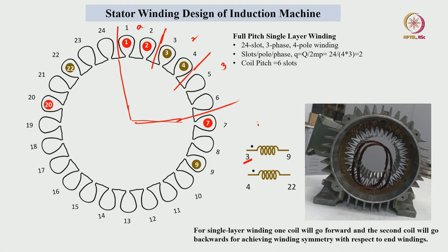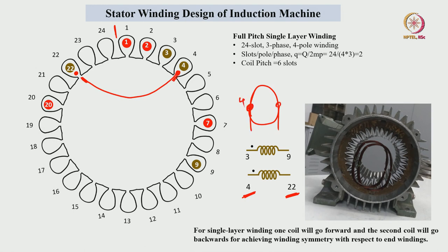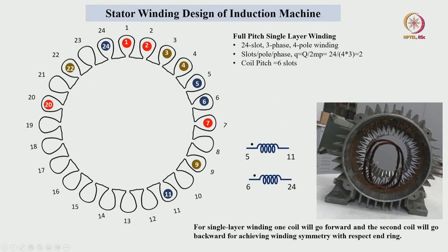The second phase coil is placed in slot number 3 and slot number 9. Next, a coil is inserted in slot number 4 and slot number 22. The 4th slot and 22nd slot are connected by this coil. One coil side sits in the 4th slot and the other in the 22nd slot. In the same fashion, we place the coils related to C phase or the third phase.